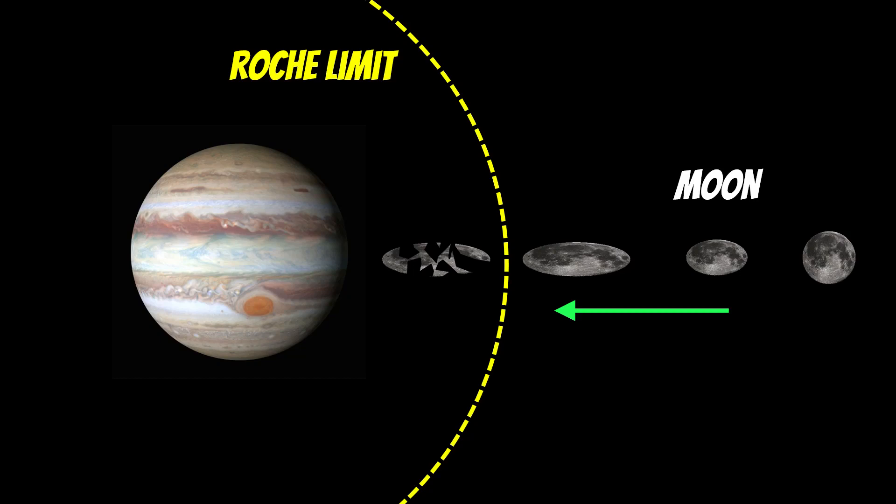The edge of the ring system sits at this Roche limit. If anything goes inside of that, then it can't hold itself together from its own self-gravity, so it gets tidally pulled apart.